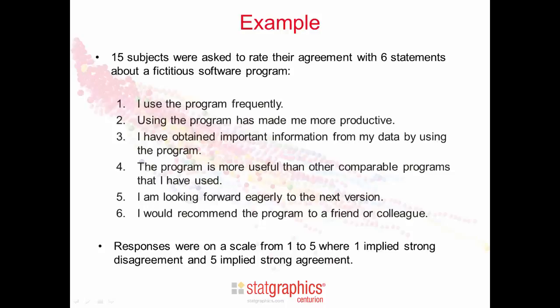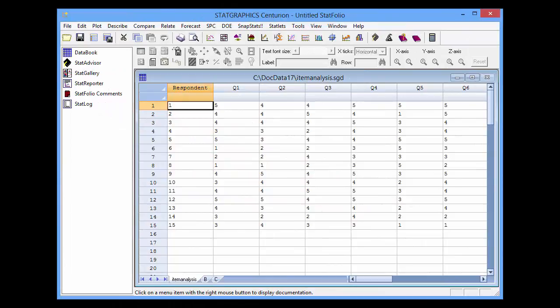Each subject was asked to rate their agreement on a scale of one to five, where one implied strong disagreement and five implied strong agreement. I've placed the data for the survey in the StatGraphics data sheet. There's one row for each subject or respondent, and their response on a scale of one to five for each of the six statements are placed in the columns Q1 through Q6.